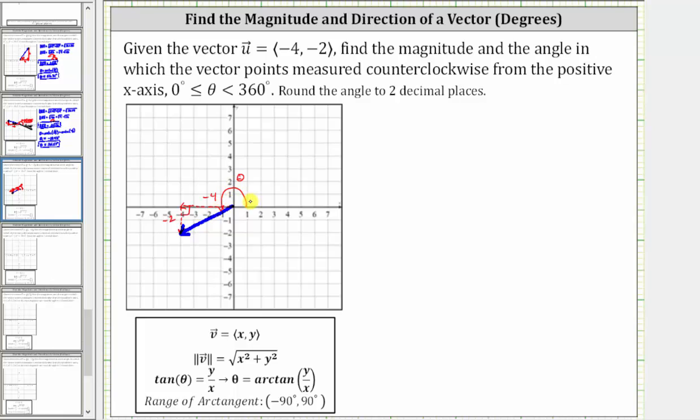To determine the direction of the vector, the angle theta, we can use the fact that on the coordinate plane, tangent theta equals y divided by x. Solving for theta, we have theta equals arc tangent of y divided by x.